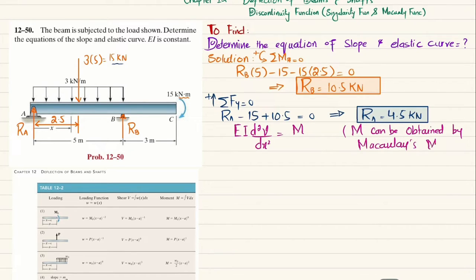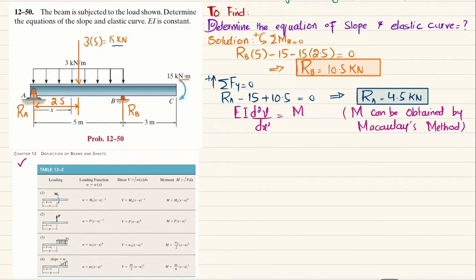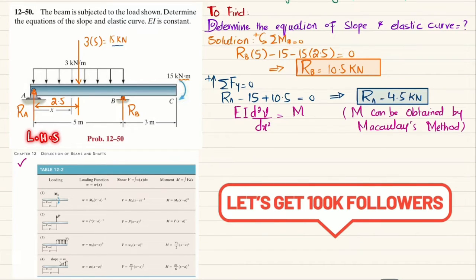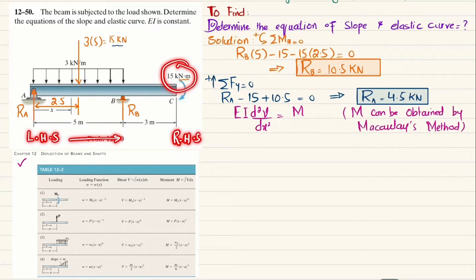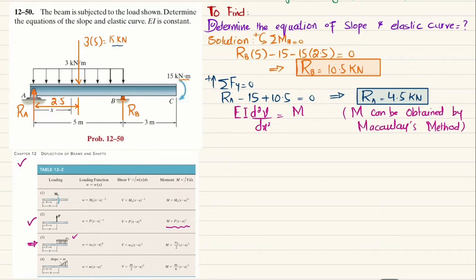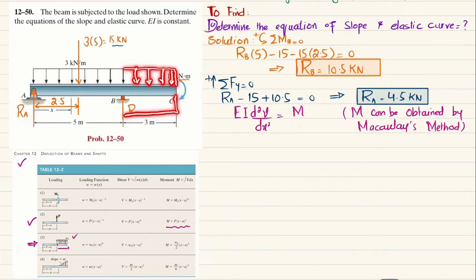We use the table from chapter 12 of Hibbeler. Starting from the left and moving right, we note that our uniformly distributed load runs from A to B only, but Macaulay's method requires it to extend to the end. So we extend the UDL from B to C as well, and then subtract it back (with opposite direction) to cancel its effect beyond B.